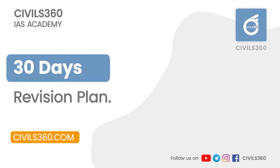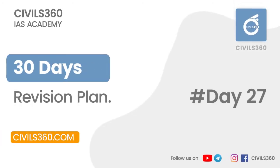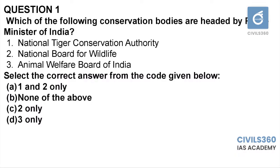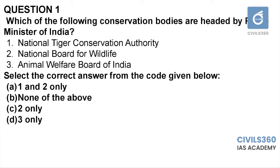Hi everyone, today we will be discussing questions from day 27 of the revision plan. Question number one: which of the following conservation bodies are headed by the Prime Minister of India? One: National Tiger Conservation Authority. Two: National Board for Wildlife. Three: Animal Welfare Board of India. National Tiger Conservation Authority is a statutory body and it is headed by the Ministry of Environment.